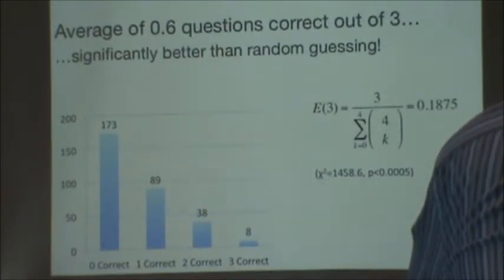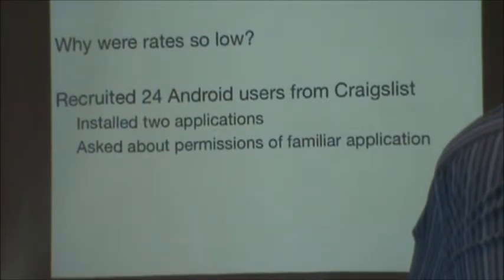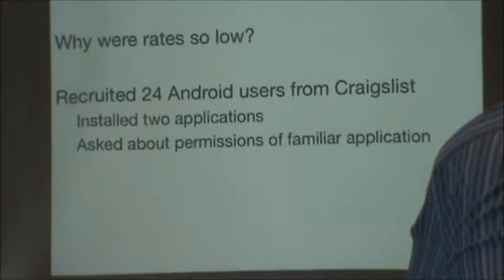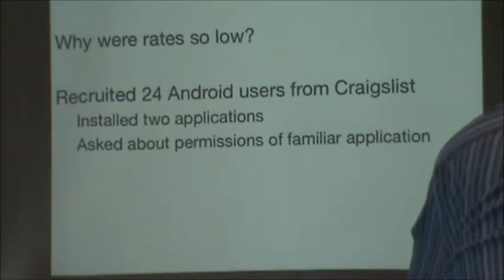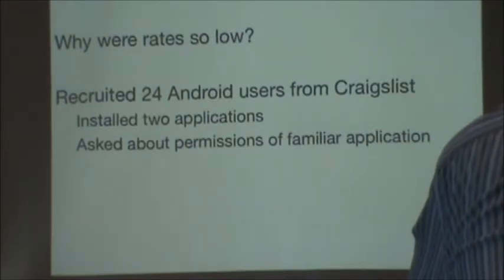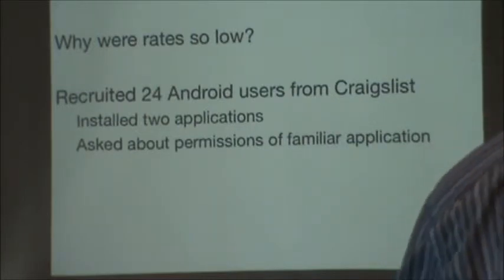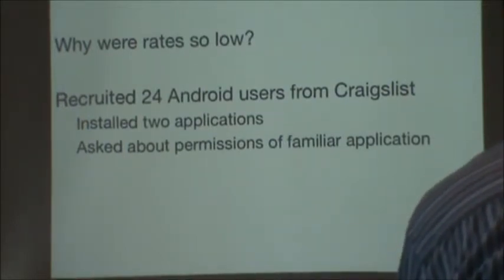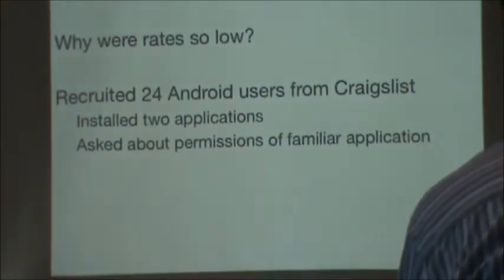So the question is: why are the rates so low? This is where qualitative research is important. We recruited 24 Android users via Craigslist and had them come in for interviews about how they used their device. We had a couple of tasks as well. First, we had them install two different applications — we asked them to go to the Android market and pick apps that would fit a given scenario — with the goal of seeing whether, during the installation process on their own personal devices, they pay any attention to the permission messages shown at install time.